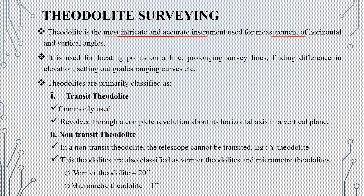In the horizontal measurements, we use the vertical angles. The main purpose of the Theodolite is measurement. We use it to establish points in a line. The area is available. It is also used for elevation difference and set out.